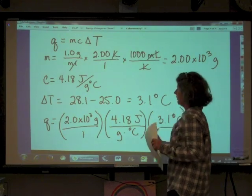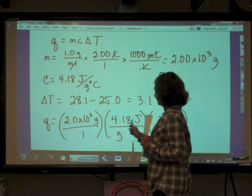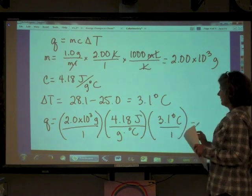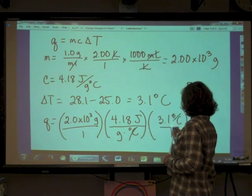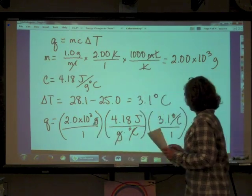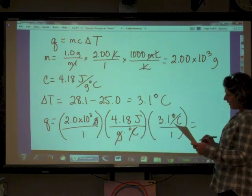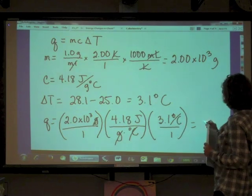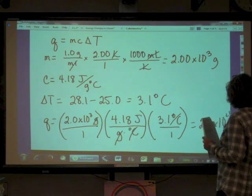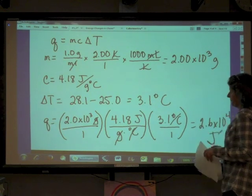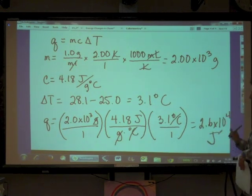Our joules are left - grams cancel, degrees Celsius cancel. This leaves us with 2.6 times 10 to the fourth joules. That's Q.